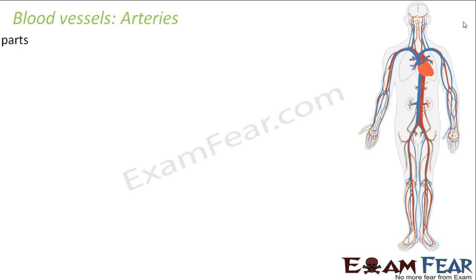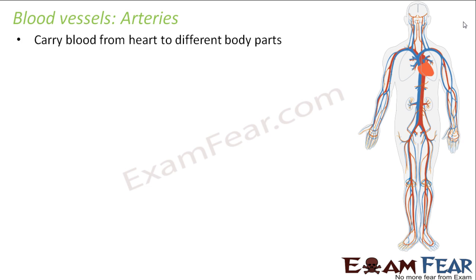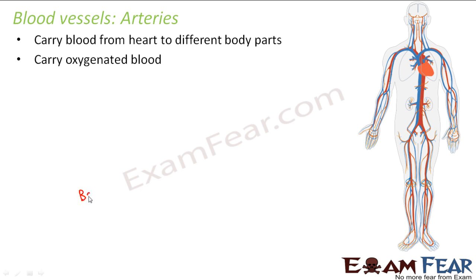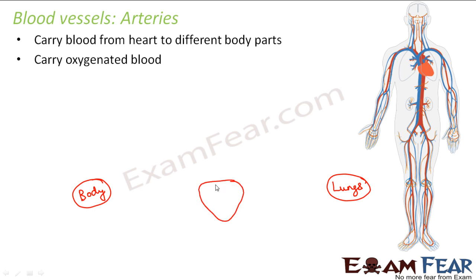Let us start our discussion with arteries. Arteries carry blood from the heart to different body parts, and they always carry oxygenated blood. To understand this, let us quickly plot a diagram. This is the body, this is the lungs, and this is the heart which has four chambers: right auricle, left auricle, right ventricle, and left ventricle.